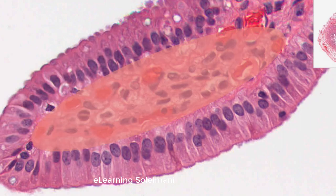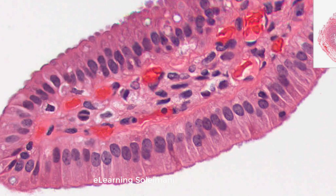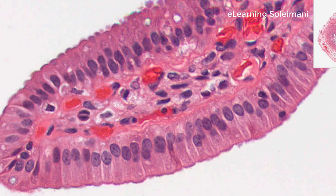In loose connective tissue, numerous blood vessels are visible that contain red blood cells. Lymphocytes can be seen in blood vessels, connective tissue, and epithelium. Fibroblasts with a large oval nucleus and pale cytoplasm are visible. Fibrocytes with a dark nucleus are also seen.